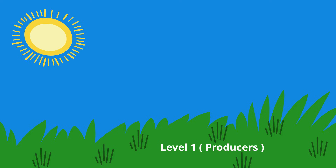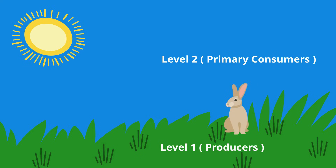Level 2 are called primary consumers because they eat other producers. These consumers get their energy from eating plants. An example would be rabbits that eat plants.